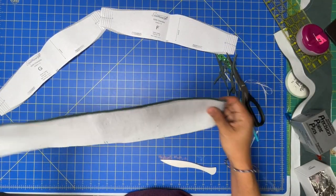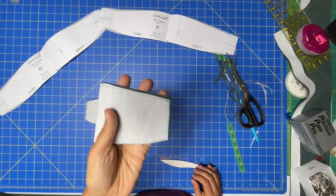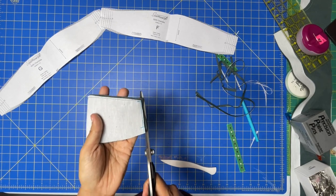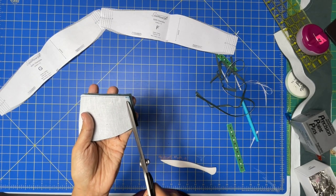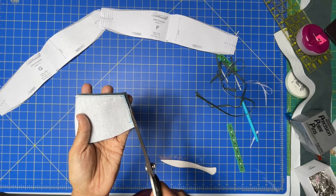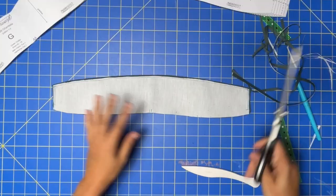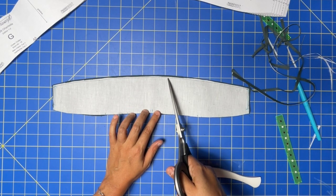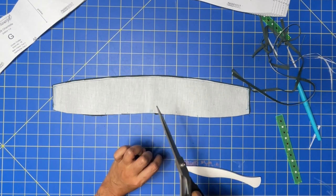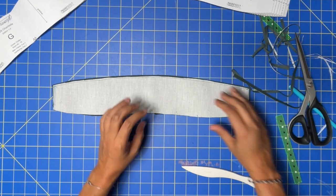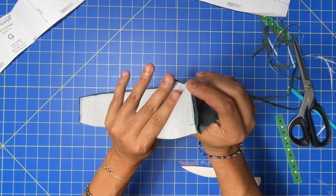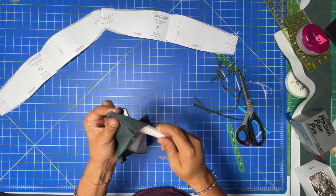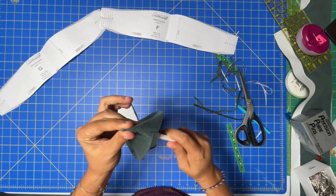Off camera I also trimmed and graded the seam allowances. All that means is I took the seam allowances, cut off half of them, and then took the interfaced seam allowance and cut that in half again. Now this all gets turned right side out, and you're going to want to take a point turner of some kind to help you get your corners nice and crisp.